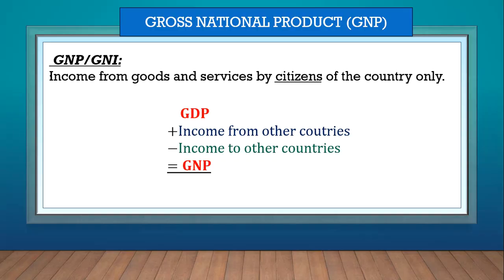GNI, on the other hand — remember GNI and GNP are also the same thing. Gross national product and GNI means gross national income. They mean exactly the same thing. GNP looks at income from citizens only — income produced by citizens only, so you want to only get the income that's going to be staying in the country.